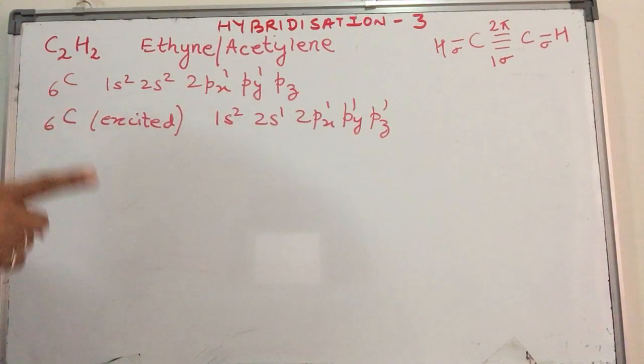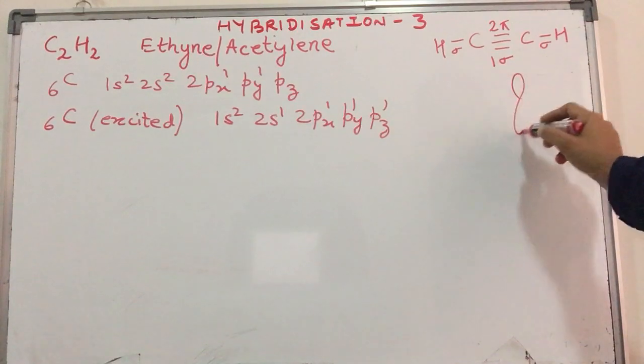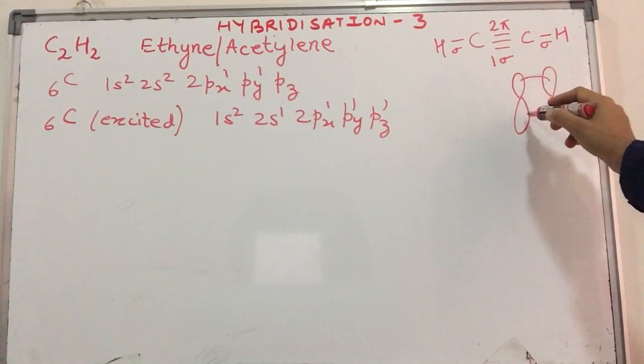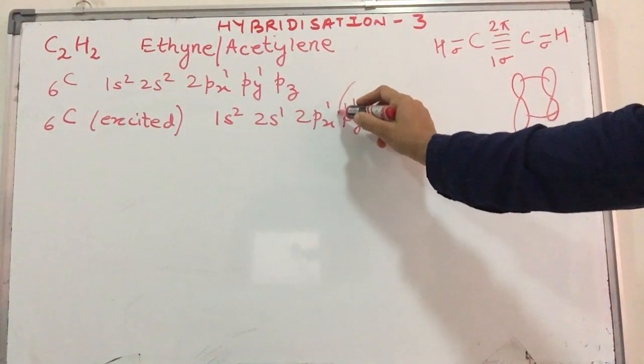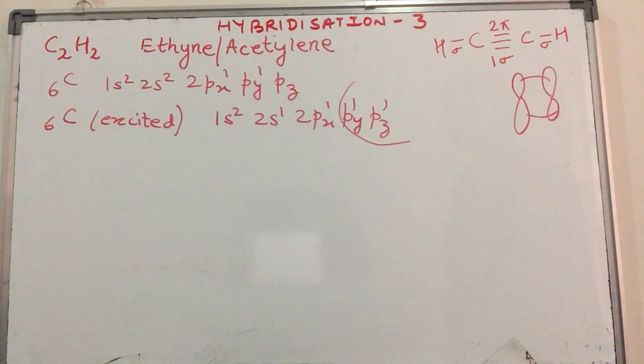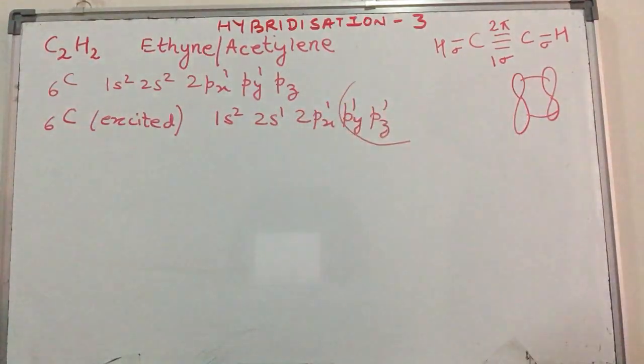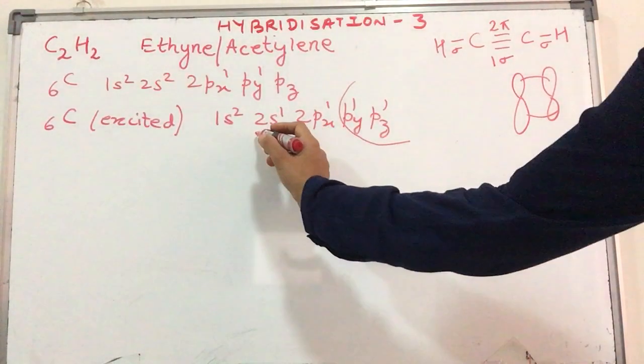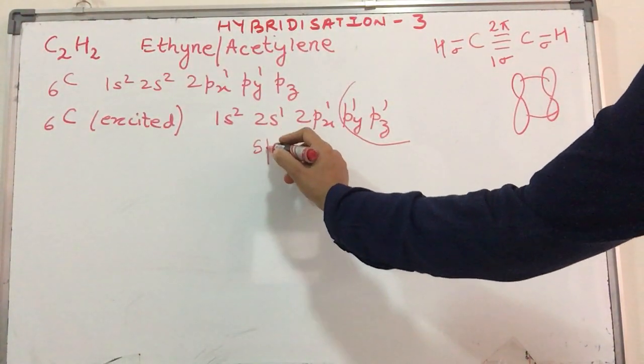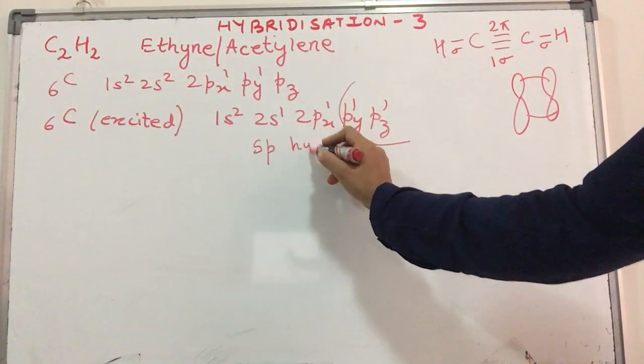Moreover, it has to form 2 pi bonds. Two pi bonds means there is an overlap of 2 lobes for the p orbital in order to form a pi bond. So we leave out 2 of the p orbitals here from hybridization. What are we left with now? We are left with 1s and 1p orbital in order to form a hybrid orbital. So what will be the name given to this hybrid orbital? It will be sp hybrid orbital.